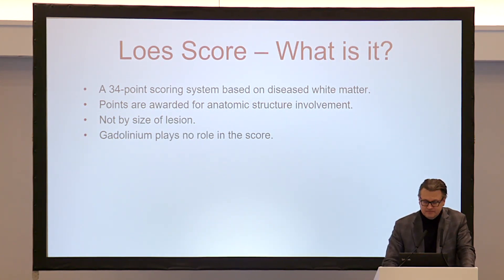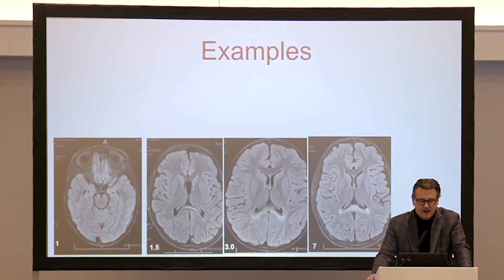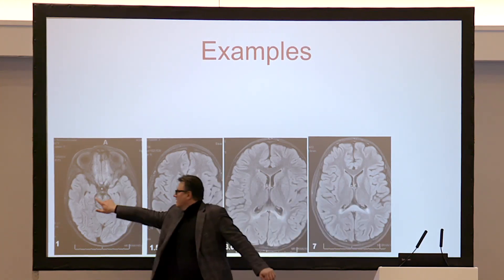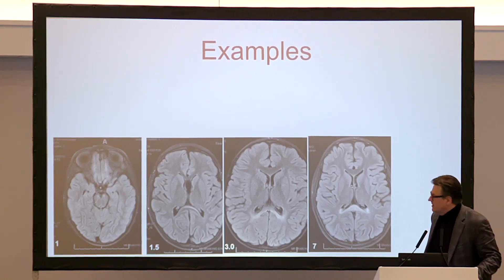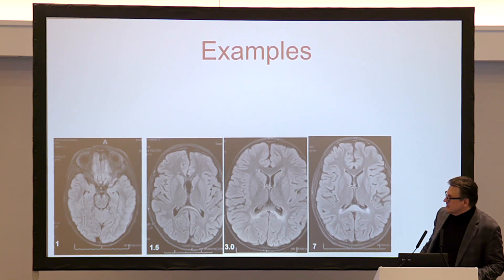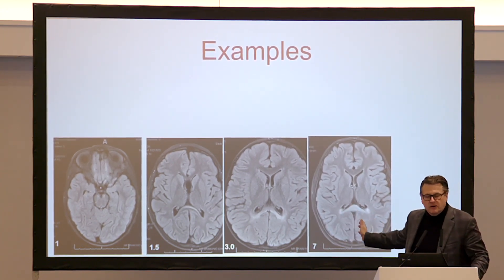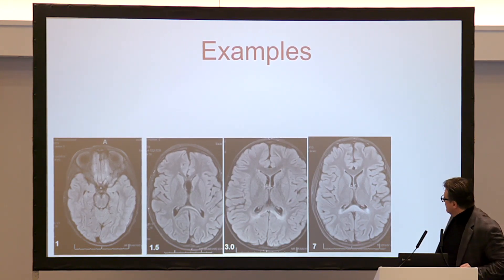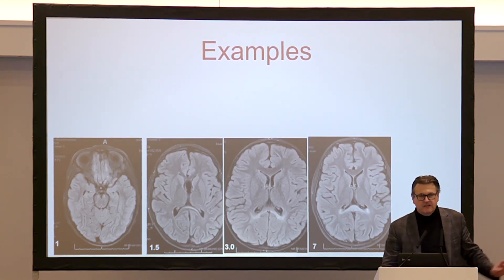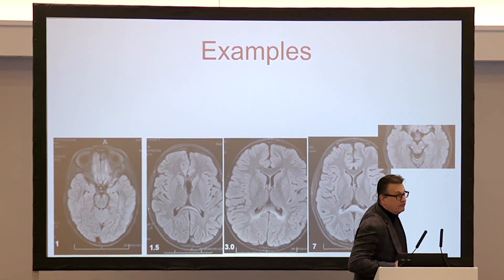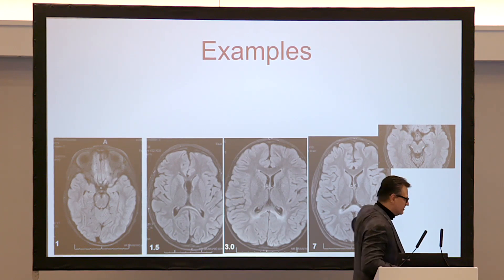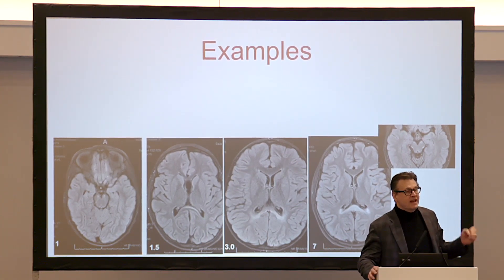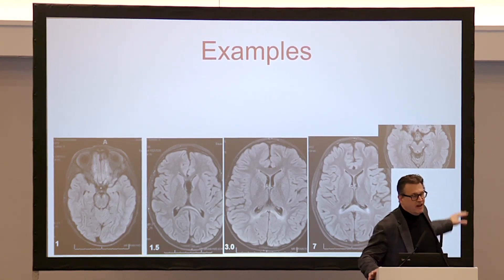Here are some examples. On the left side is a child with low burden of disease — a score of 1. There's a child with a standard splenial lesion, score of 1.5, going to 1.1 on just one side. Child number three has a score of about 3. The one on the far right is a score of 7. That child looks like a 3 at the higher level, but further down in the MRI there are small structures in the brainstem affected by disease, and those points add up quickly — that's how that child got to a 7 so fast.